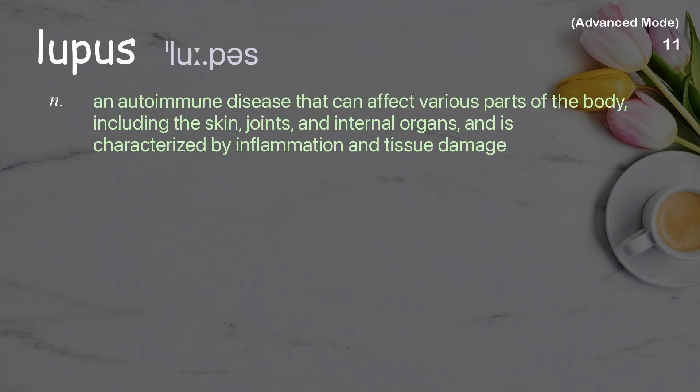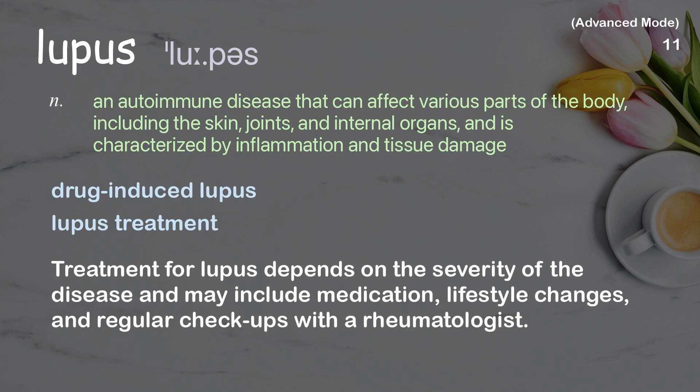Lupus: an autoimmune disease that can affect various parts of the body, including the skin, joints, and internal organs, and is characterized by inflammation and tissue damage. Examples: drug-induced lupus, lupus treatment. Treatment for lupus depends on the severity of the disease and may include medication, lifestyle changes, and regular check-ups with a rheumatologist.